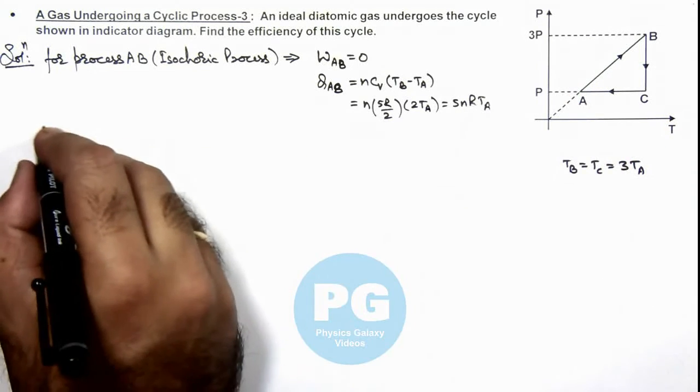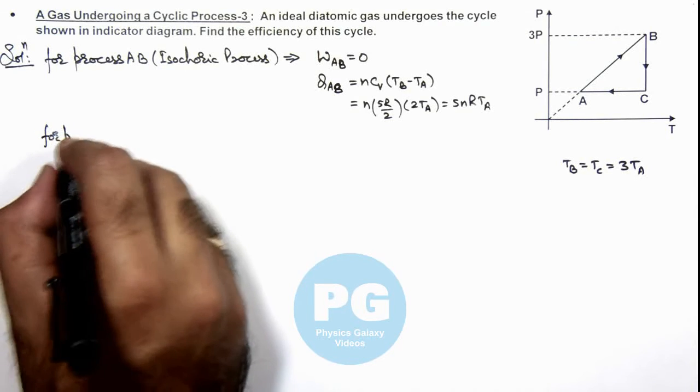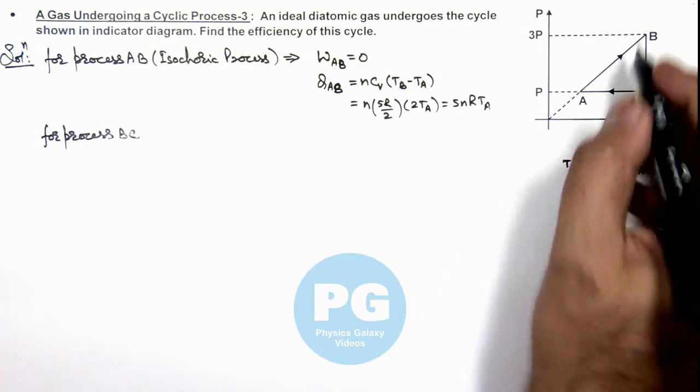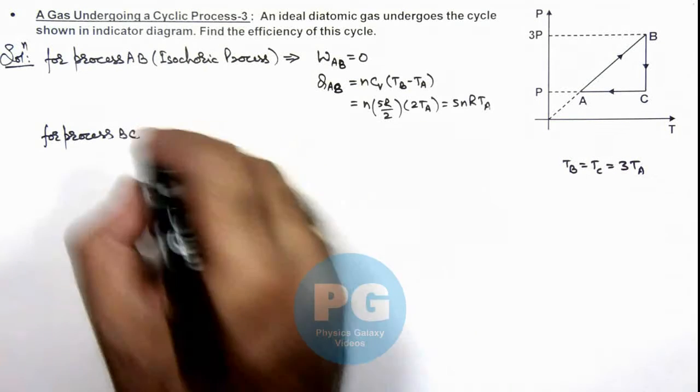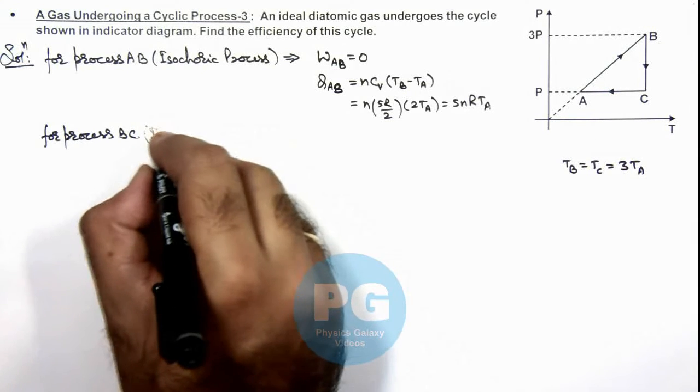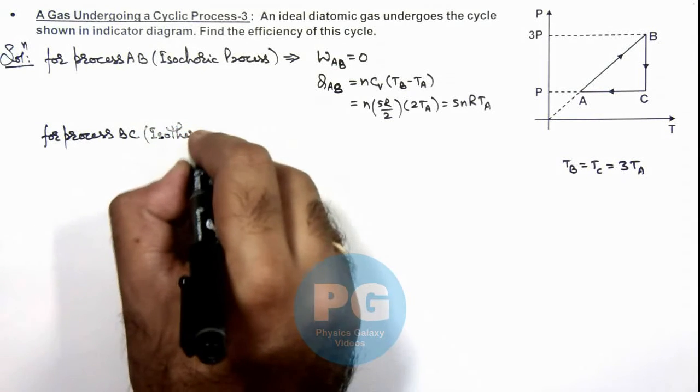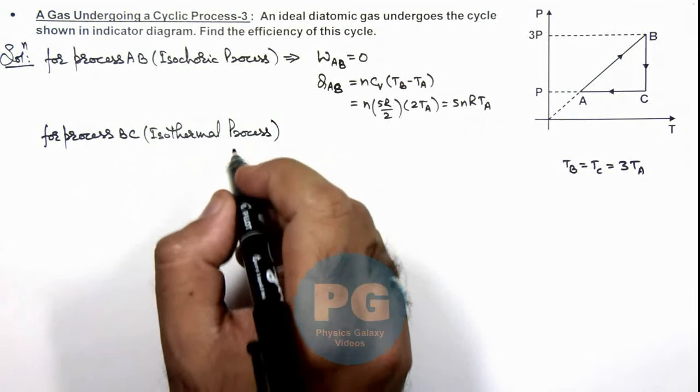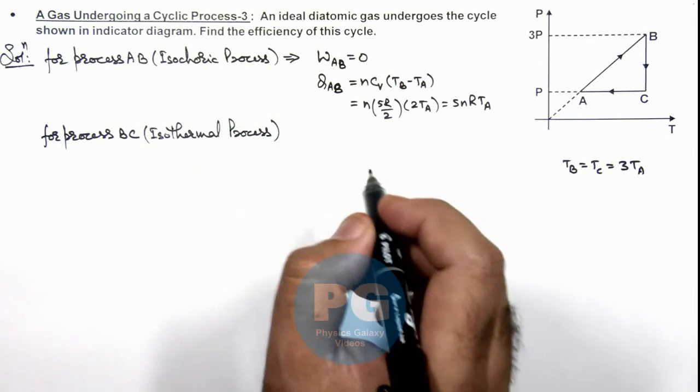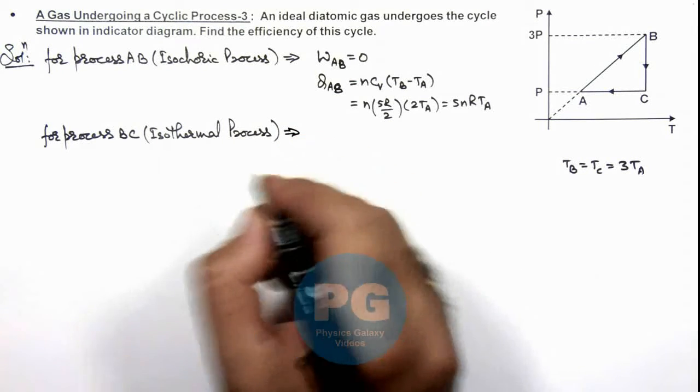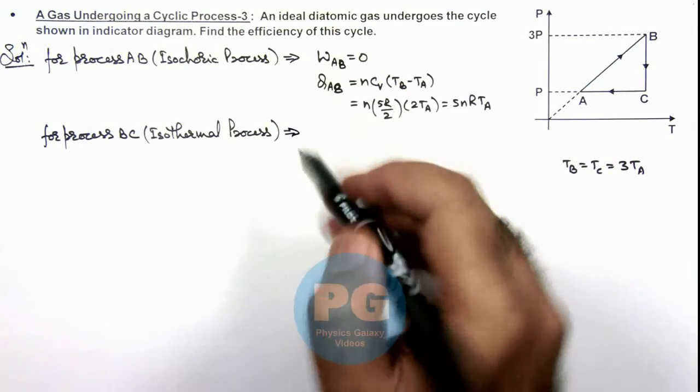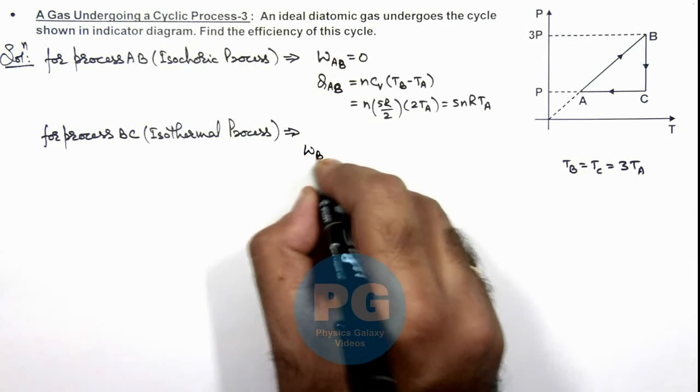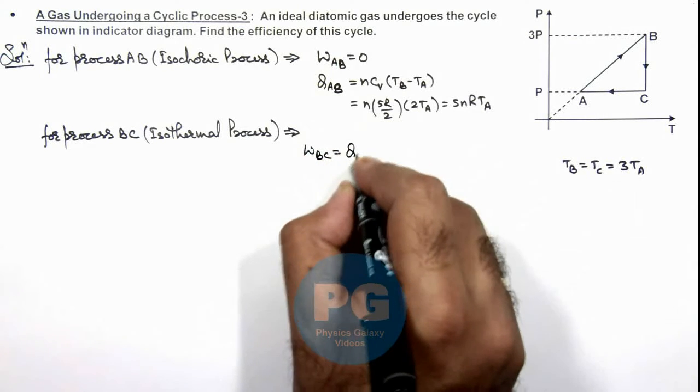Now if we talk about process BC, then here you can see in process BC temperature is constant. This is an isothermal process. And we know in isothermal process no change in internal energy is there. So in this case work done and heat supplied will be equal. So here we can write WBC is equal to heat supplied in the process BC.